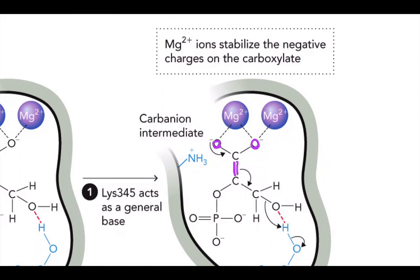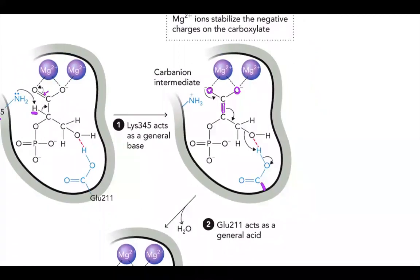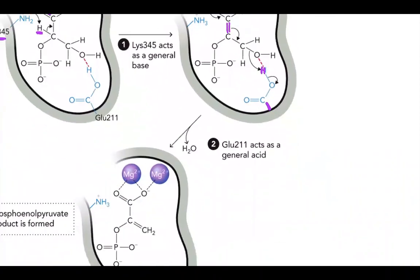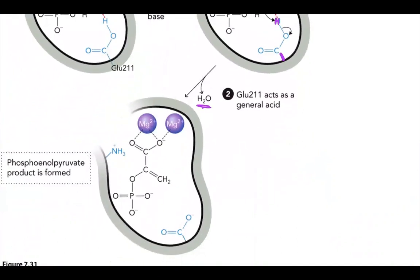Now we have glutamate-211. Glutamate is going to donate a proton to the hydroxyl — it's going to donate that hydrogen to our intermediate. So if it's donating that hydrogen, it's going to act as our acid. And it's going to result in the elimination of water and the formation of our phosphoenolpyruvate. So we release water and then form our final product, which can then be released.